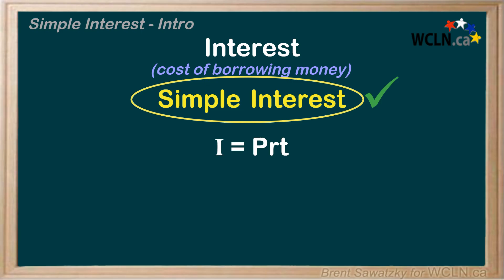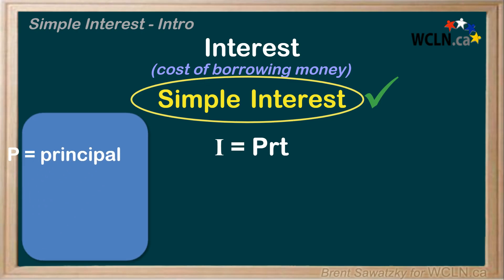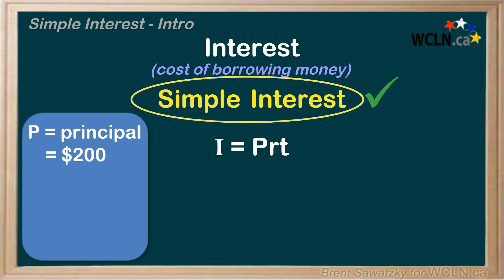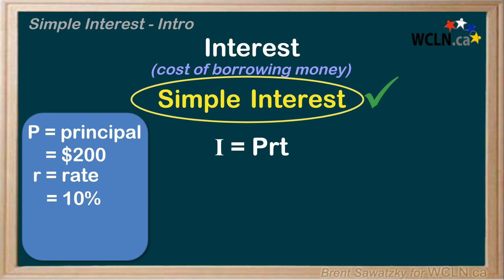Let's use this formula to figure out how much it would cost your friend to borrow the $200 from you. In our formula, P is the principal, or the amount being borrowed — that is $200 in our case. R is the rate, or interest rate, and it's normally shown as a percentage. For our situation, let's say you'll charge 10%. And finally, T is the time.